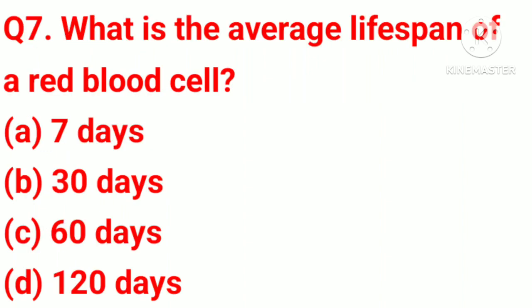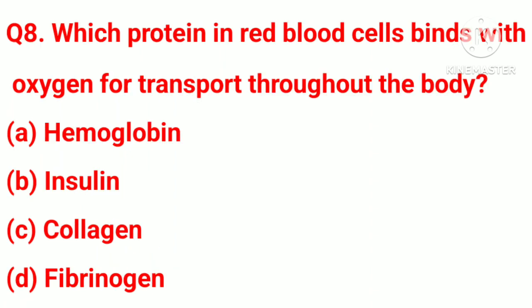Question number 7. What is the average life span of a red blood cell? Option A, 7 days. Option B, 30 days. Option C, 60 days. Option D, 120 days. Correct answer: Option D, 120 days.